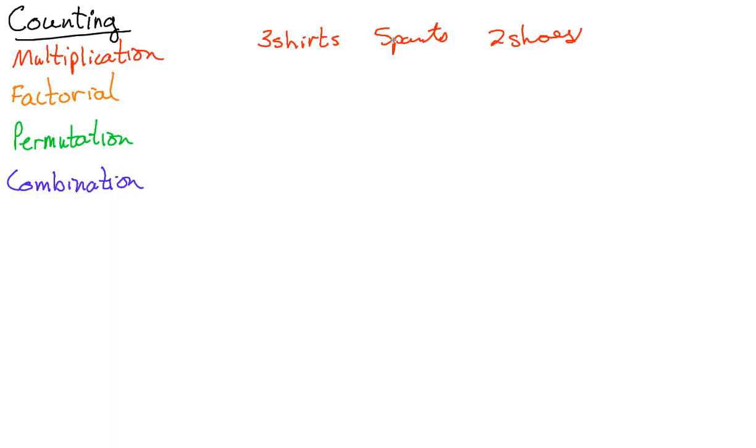Well, if each shirt goes with five pairs of pants, let's think about it. We're not worried about actual fashion here, we're just counting up how many different things there were. Each shirt can go with five pairs of pants. So the first shirt, 1, 2, 3, 4, 5, second shirt, 1, 2, 3, 4, 5, third shirt, 1, 2, 3, 4, 5. You get 15 just between shirts and pants.